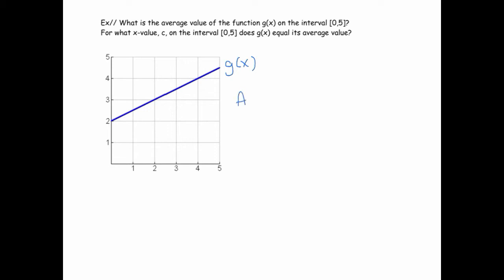The average value of the function on the interval [0, 5]—well, the average of g(x) is just going to be 1/(5 - 0) times the integral from 0 to 5 of g(x).